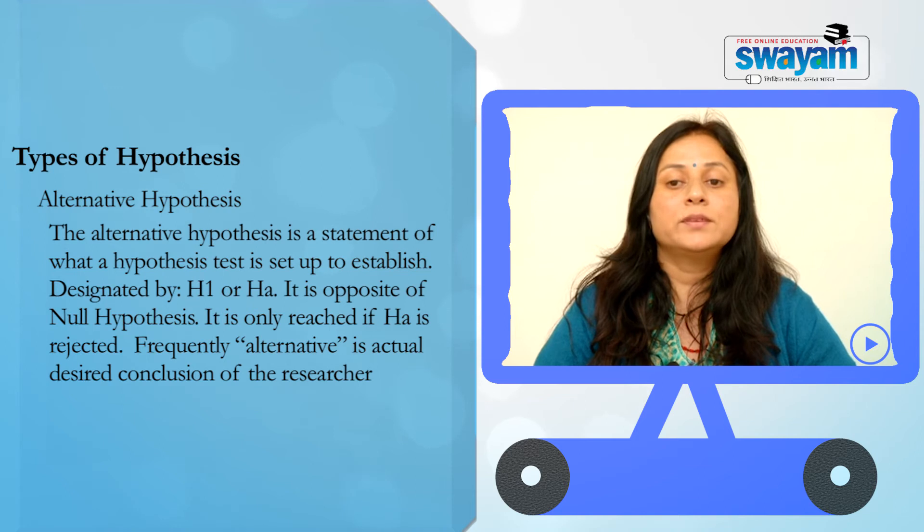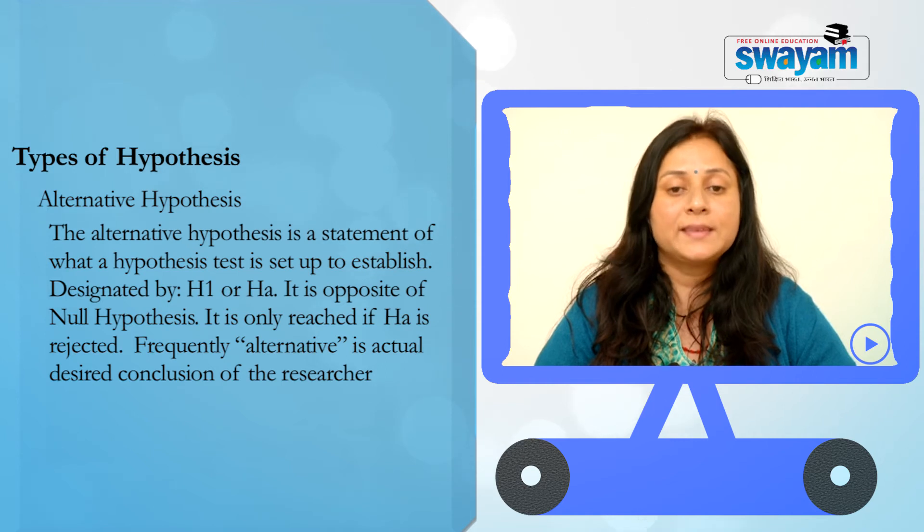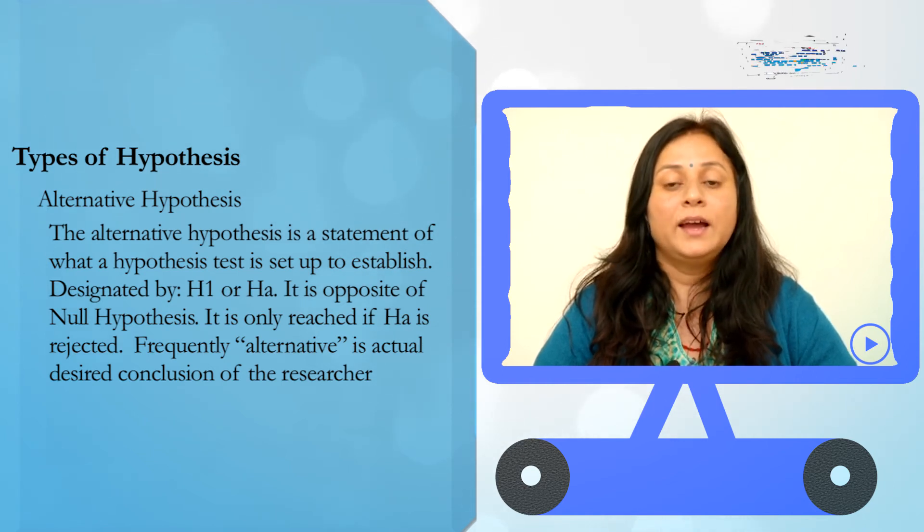We give special consideration to the null hypothesis because the null hypothesis relates to the statement being tested, whereas the alternative hypothesis relates to the statement to be accepted when the null hypothesis is rejected. The final conclusion, once the test has been carried out, is always given in terms of the null hypothesis — we either reject the null hypothesis in favor of the alternative hypothesis, or do not reject the null hypothesis. We never conclude 'reject alternative hypothesis' or 'accept alternative hypothesis.' If we conclude 'do not reject null hypothesis,' this does not necessarily mean that the null hypothesis is true; it only suggests that there is not sufficient evidence against the null hypothesis in favor of the alternative hypothesis.